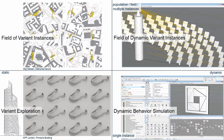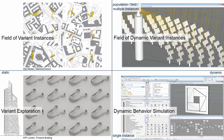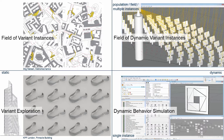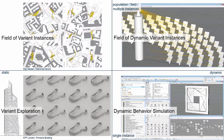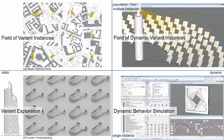An additional way to look at GC use cases is this quadrant graph. On the horizontal axis are static design results to the left and dynamic design results to the right. At the bottom are single design results, and at the top are multiple instances generated by one parametric design solution, creating populations or fields of design results.